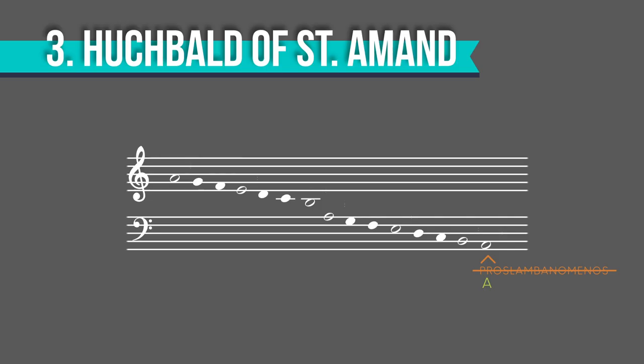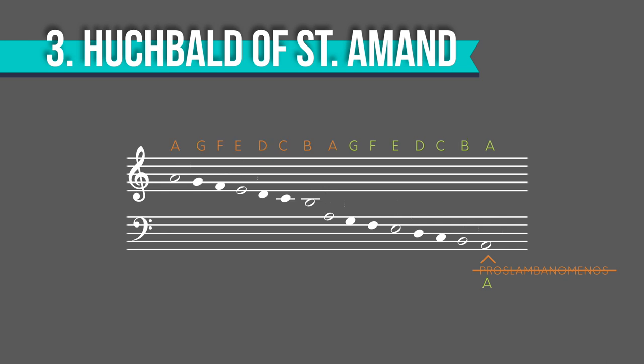In that treatise, he put letter names on every note in the Greek greater perfect system, mercifully changing the name of the lowest note to A. Can you imagine trying to play a proslambanomenos chord? However, he didn't stop at G, and labeled every note in the system running from A to P. But an anonymous treatise published around the year 1000 in Milan recognized octave equivalency, and therefore ran from A to G, starting over at the octave.